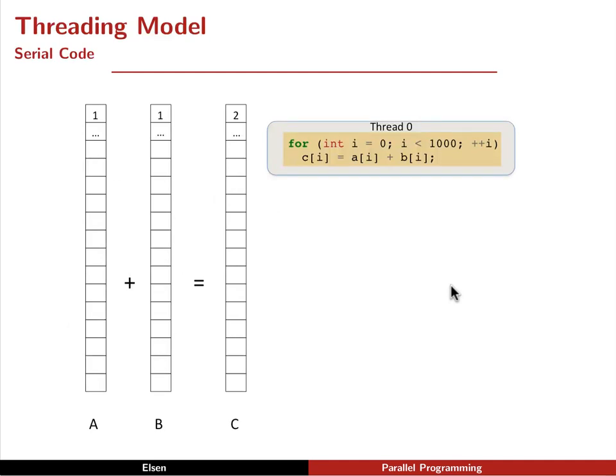Let's imagine we have a simple problem of needing to add together two vectors A and B to get a third. In serial, we would often write a loop as shown here where we loop over all 1,000 elements in the vector and simply, for each element, add up the two values and store into C. So in this case, we would take 1 and add it to 1 and store the result 2 into C, and we would repeat this for all of the indices in the vector.